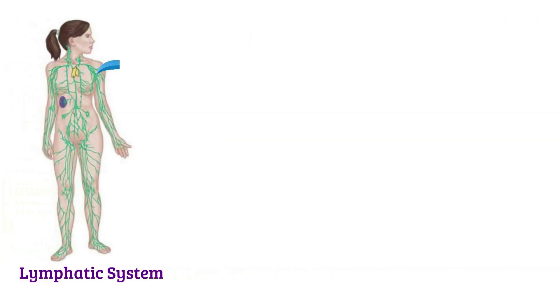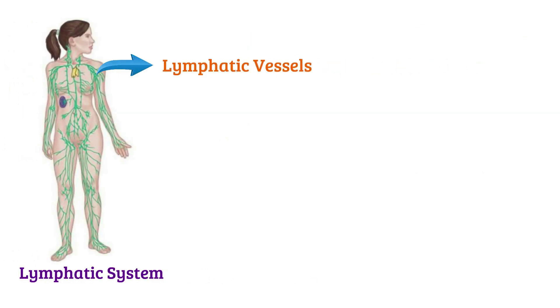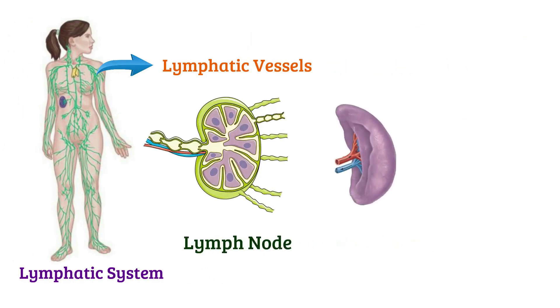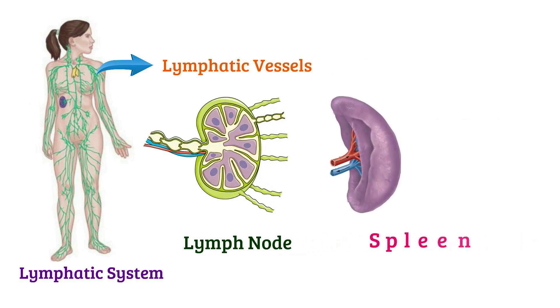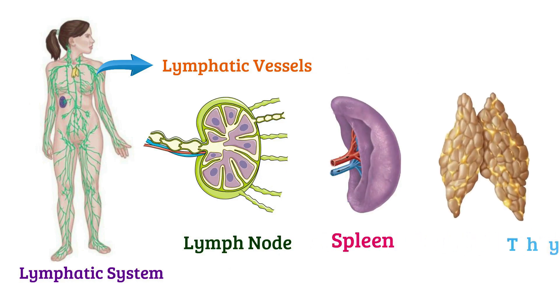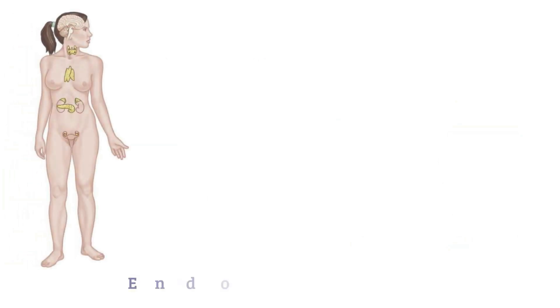Lymphatic system: lymphatic vessels, lymph node, thymus. Endocrine system.